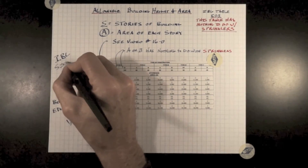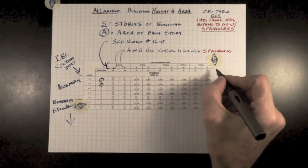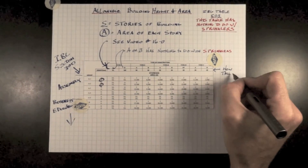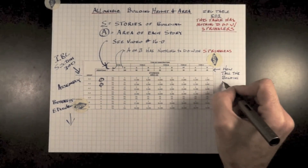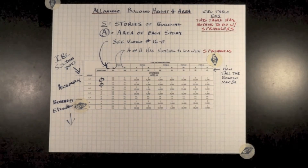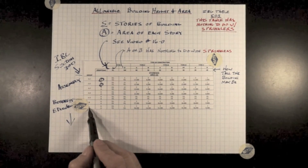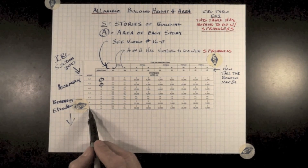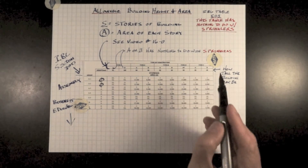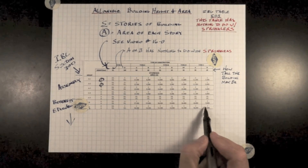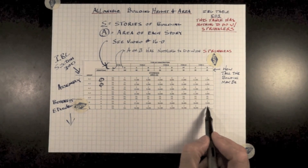This is just a portion of the table and it continues on. This is the allowable building height — the number of feet above grade this building is allowed to be. Taking education, for example — E on the left-hand side — and Type 5, which is all wood construction, we're allowed to have one story at 40 feet high and 9,500 square feet in a single story.